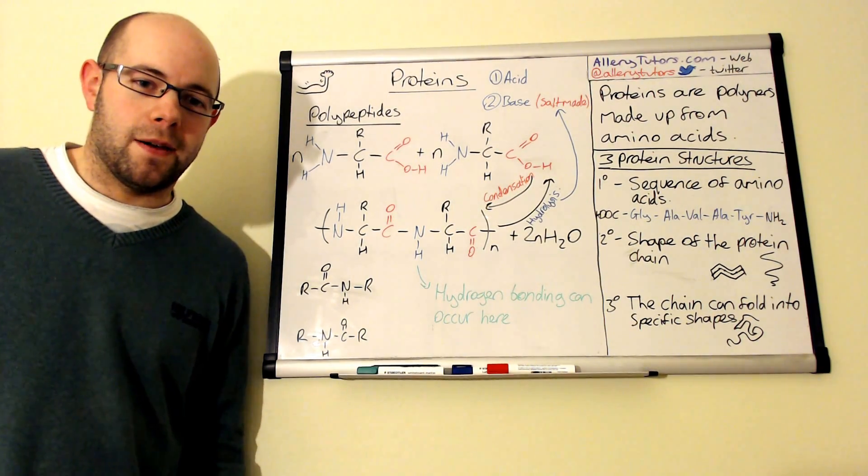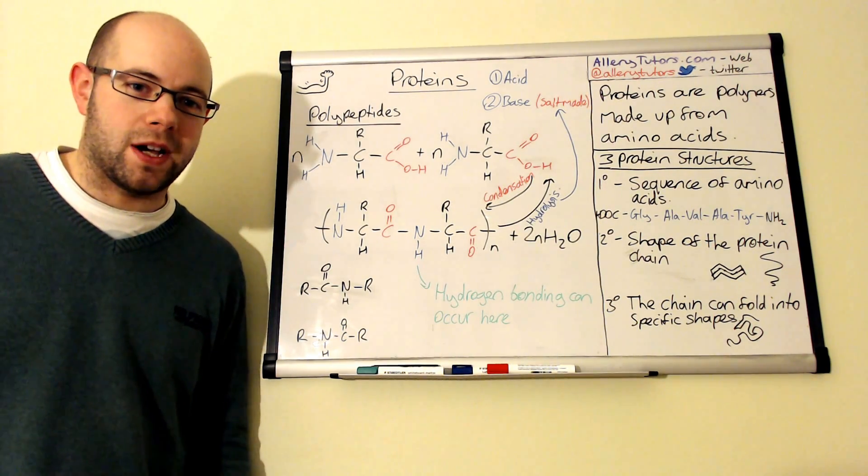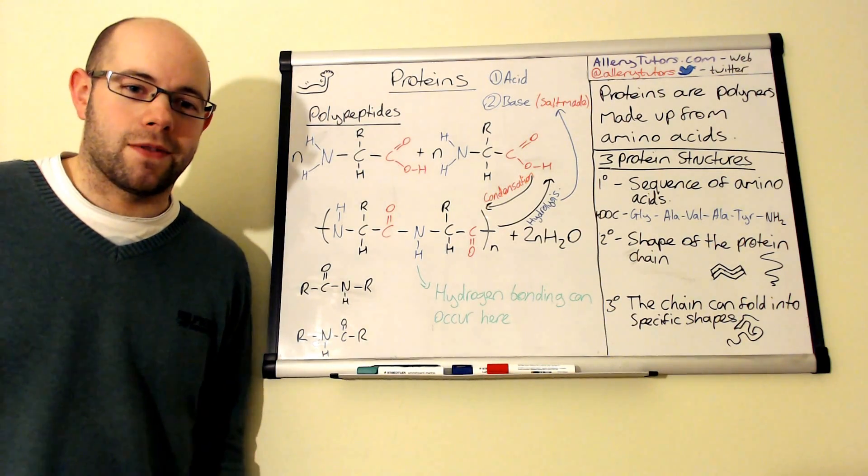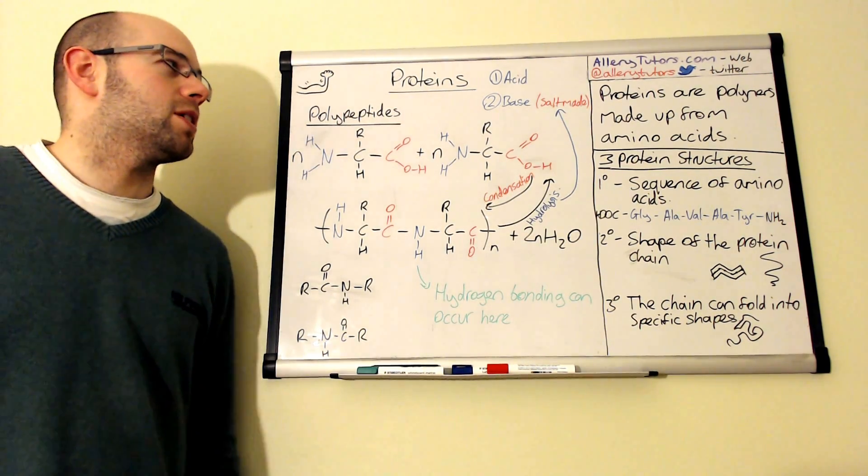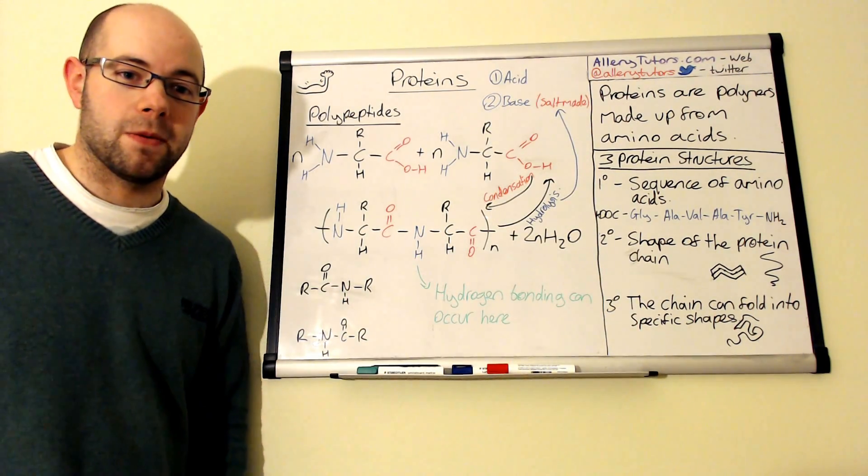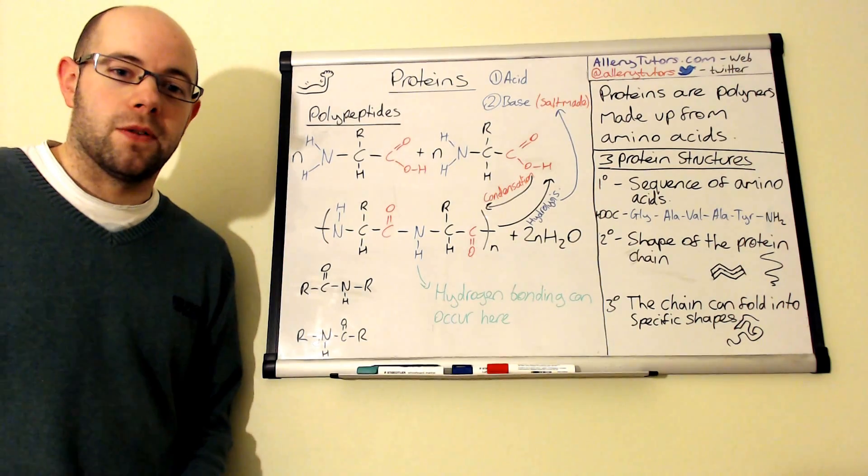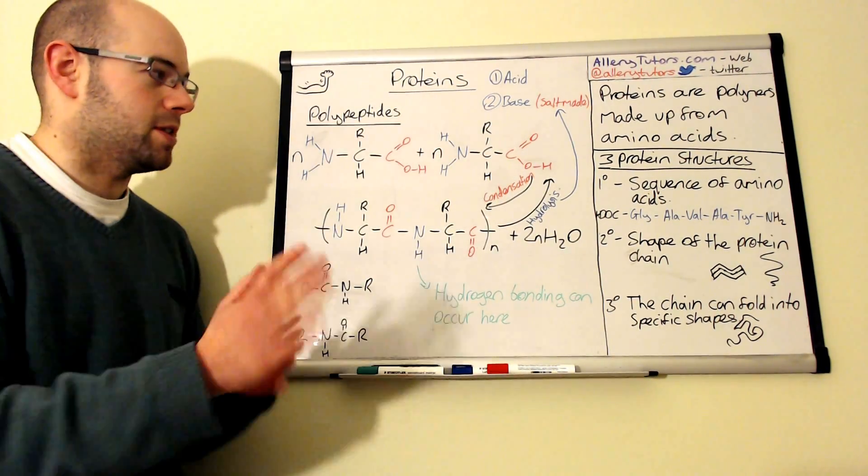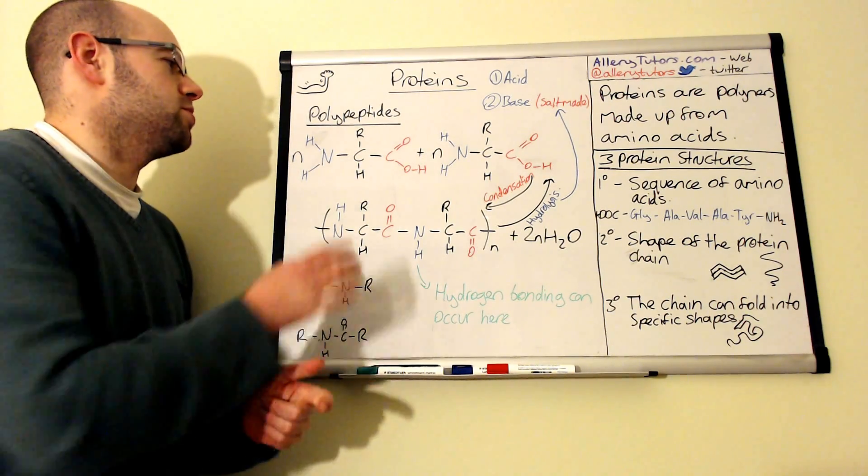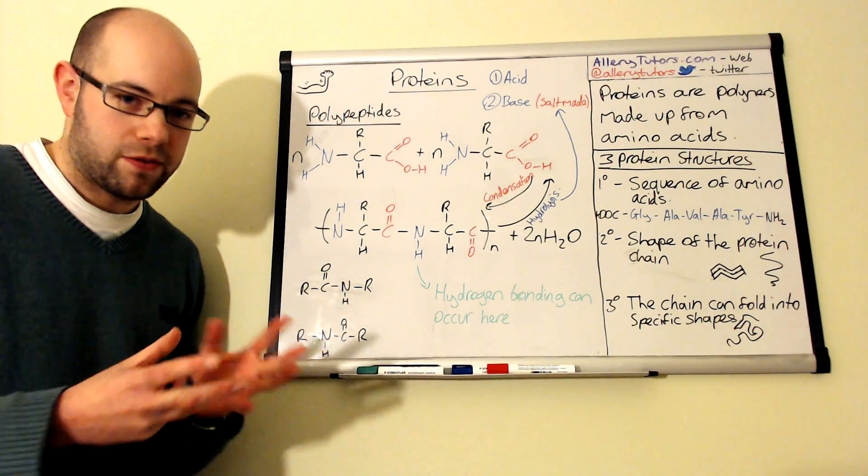We're also going to look at the peptide link, peptide bond, and see what a polypeptide is and how these chains of proteins can actually interact by intermolecular forces. We're going to start by looking at what protein is. A protein is a polymer that's made up of amino acids. What we've got here is we've got two types of amino acids here. You can get those different types of amino acids and you can join them together in a multitude of different ways to form different types of proteins.